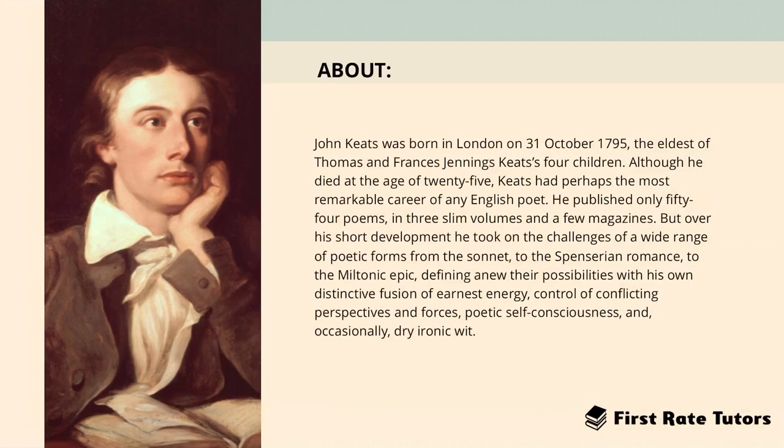John Keats was born in London on the 31st of October 1795, and he was the eldest of Thomas and Francis Jennings Keats's four children. Although he died at the age of 25, Keats had perhaps the most remarkable career of any English poet. He published only 54 poems in three slim volumes and a few magazines.